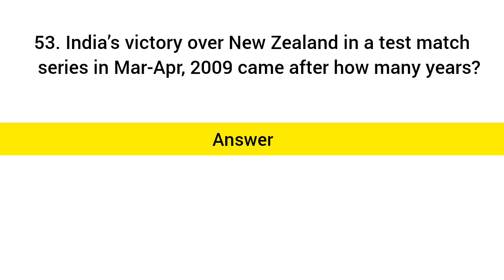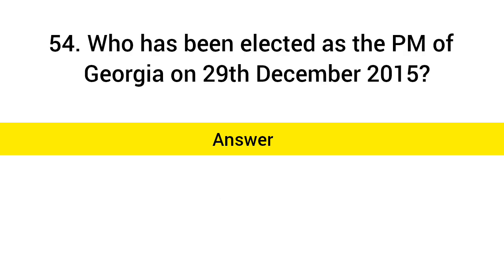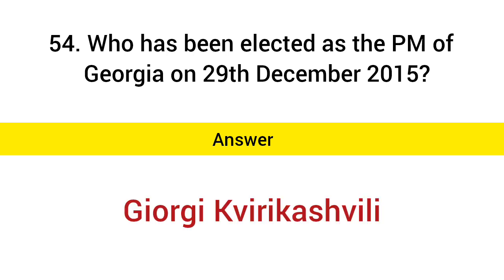India's victory over New Zealand in a Test match series in March–April 2009 came after how many years? Answer: 33. Who was elected as the PM of Georgia on 29th December 2015? Answer: Giorgi Kvirikashvili.